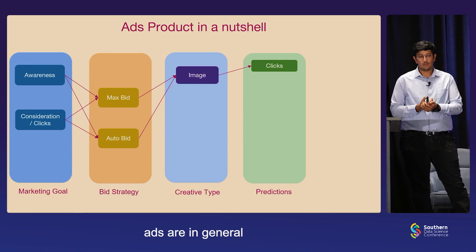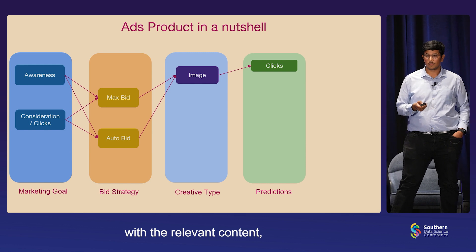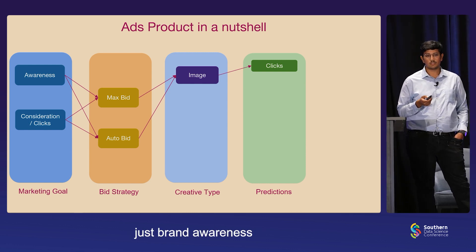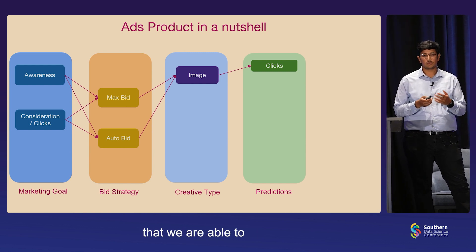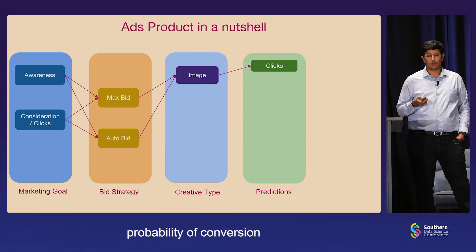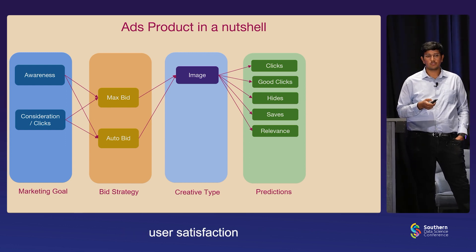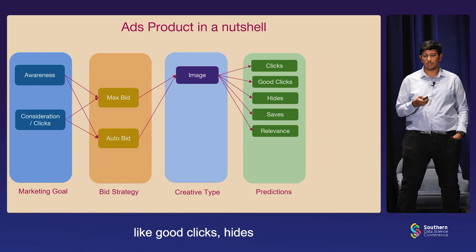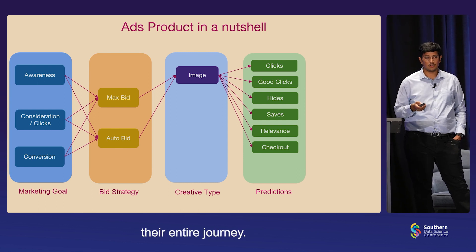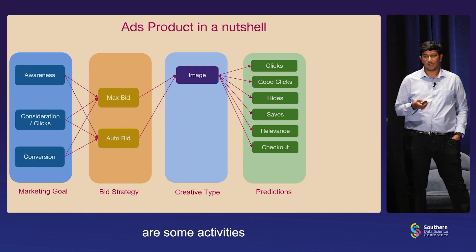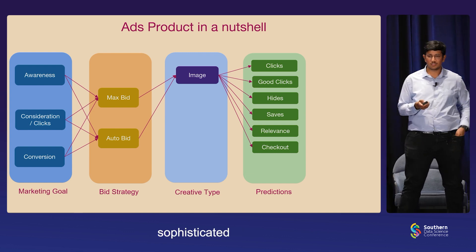Going into detail about what ads are in general: ads are a way to connect advertisers with users. At Pinterest, we provide a performance ads business to connect users with relevant content. An advertiser can have different marketing goals, be it awareness to create brand awareness, or something like driving more clicks to the platform. We need to understand what would be the right probability of conversion or a click during these instances. Not only optimizing for advertisers is enough — we also need to make sure that we value user satisfaction on the platform, which comes through many auxiliary signals like good clicks, hides, saves, and repins. Advertisers also care about driving more users to their platform to fulfill the entire journey — it could be something like checkout and add to cart. These events are some activities that don't happen on Pinterest but happen much more downstream. To ensure all of these can be done in a performant way, we have sophisticated machine learning models.